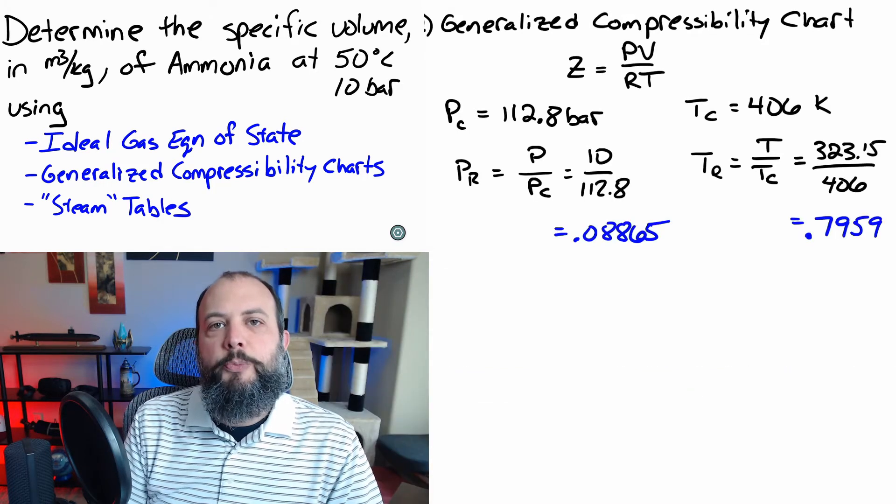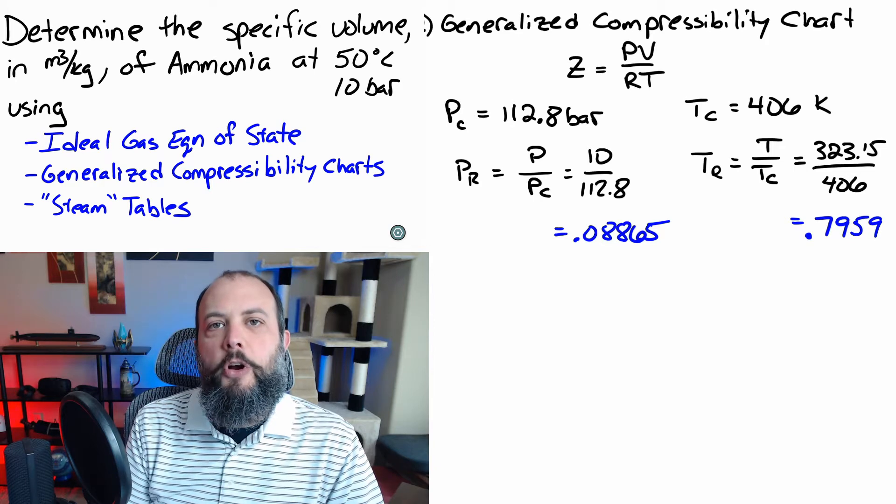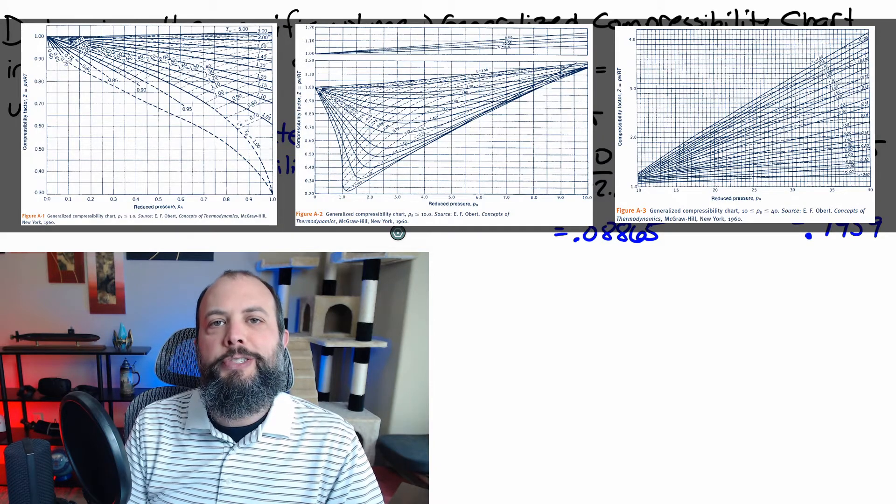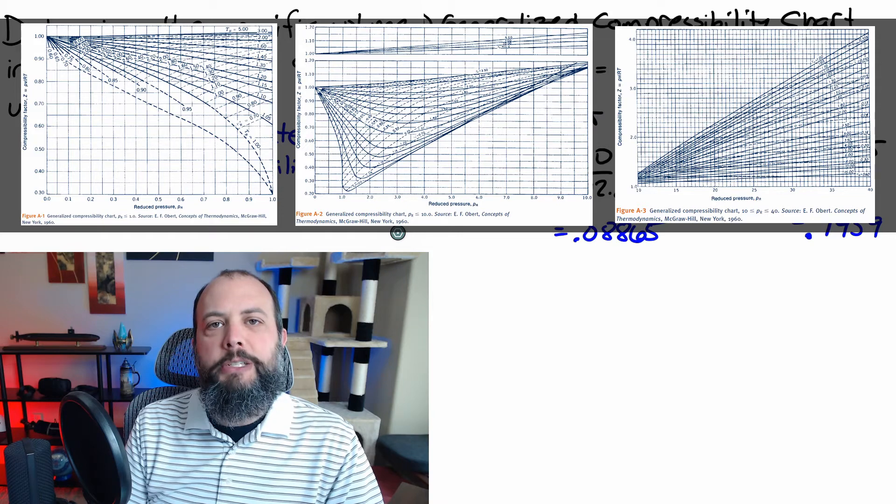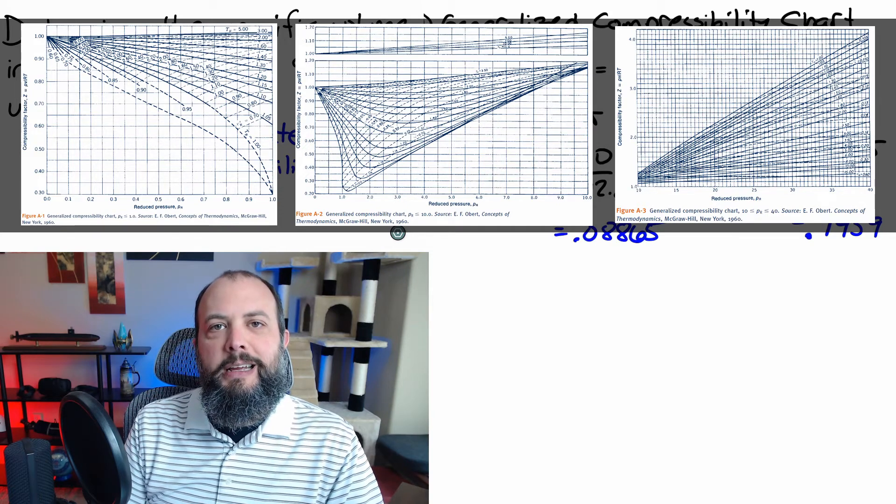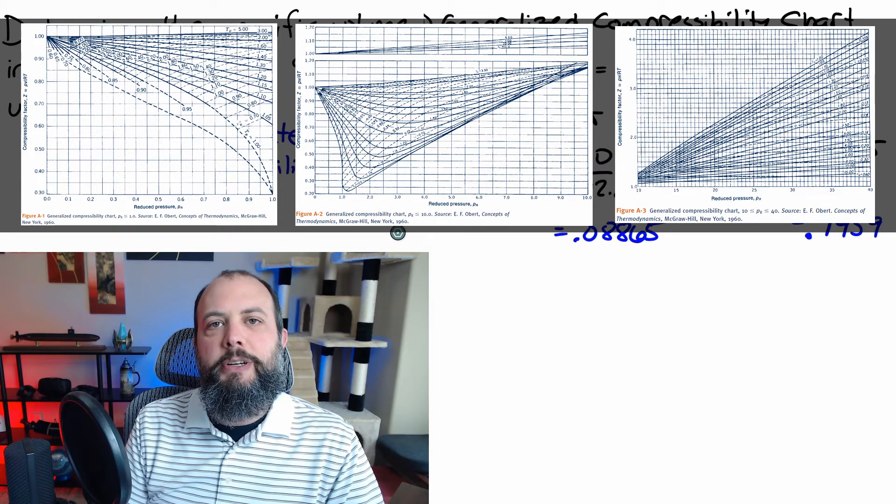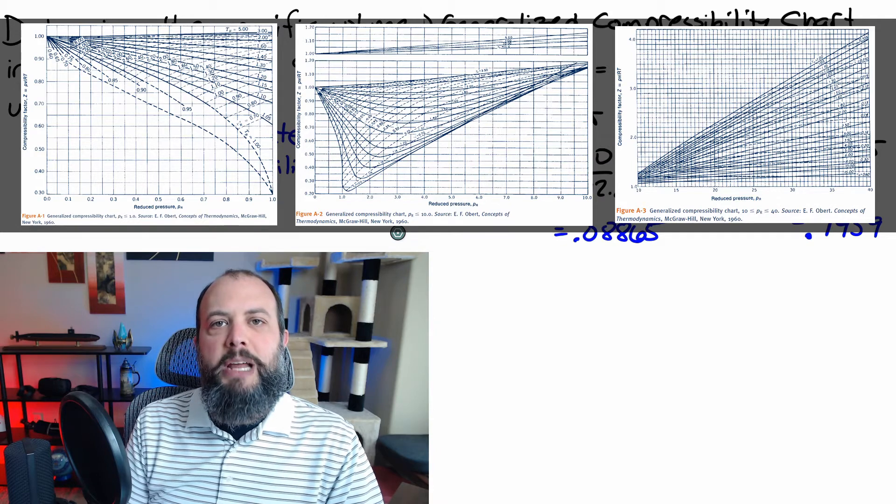So, with reduced temperature and pressure in hand, now you can go to the chart and find the z value. One thing to note is your textbook probably has more than one generalized compressibility chart. These are going to show the same information, they're just going to be zoomed in or zoomed out from each other.